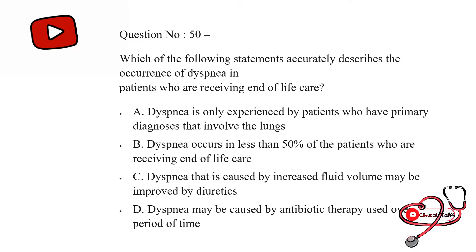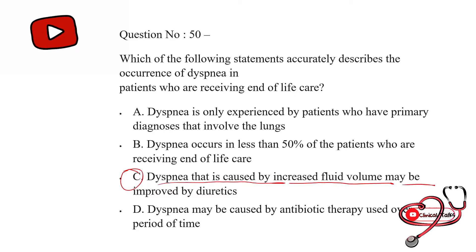Which of the following statements accurately describes the occurrence of dyspnea in patients who are receiving end-of-life care? Option first: dyspnea is only experienced by patients who have a primary diagnosis involving the lungs; second: dyspnea occurs in less than 50% of patients receiving end-of-life care; third: dyspnea caused by increased fluid volume may be improved by diuretics; last: dyspnea may be caused by antibiotic therapy used over a long period of time. The correct answer is C — dyspnea caused by increased fluid volume may be improved by diuretics.